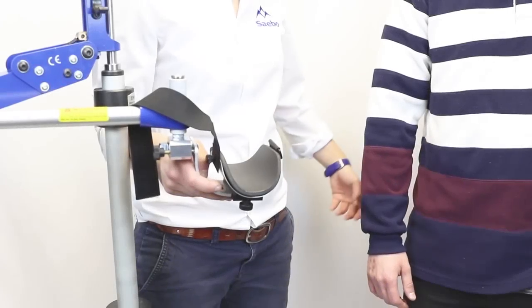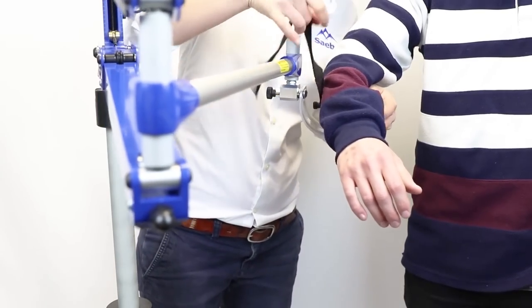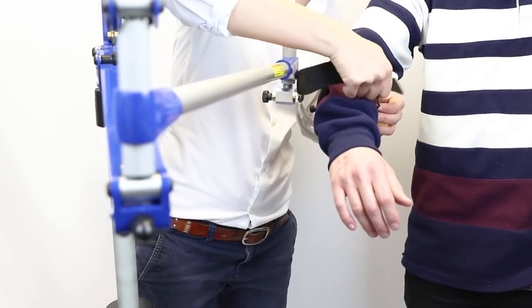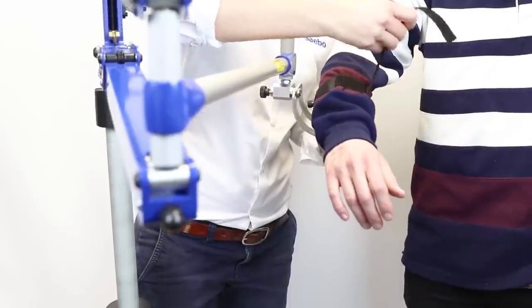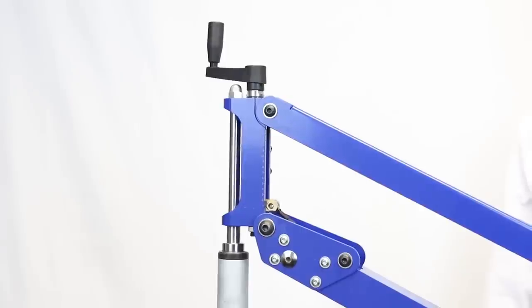When you're ready to put your patient in the device you want to place their forearm in the forearm support about two-thirds of the way up towards their elbow and secure the forearm strap tightly. You then have the option of using the tension scale to increase the assistance when they're moving.